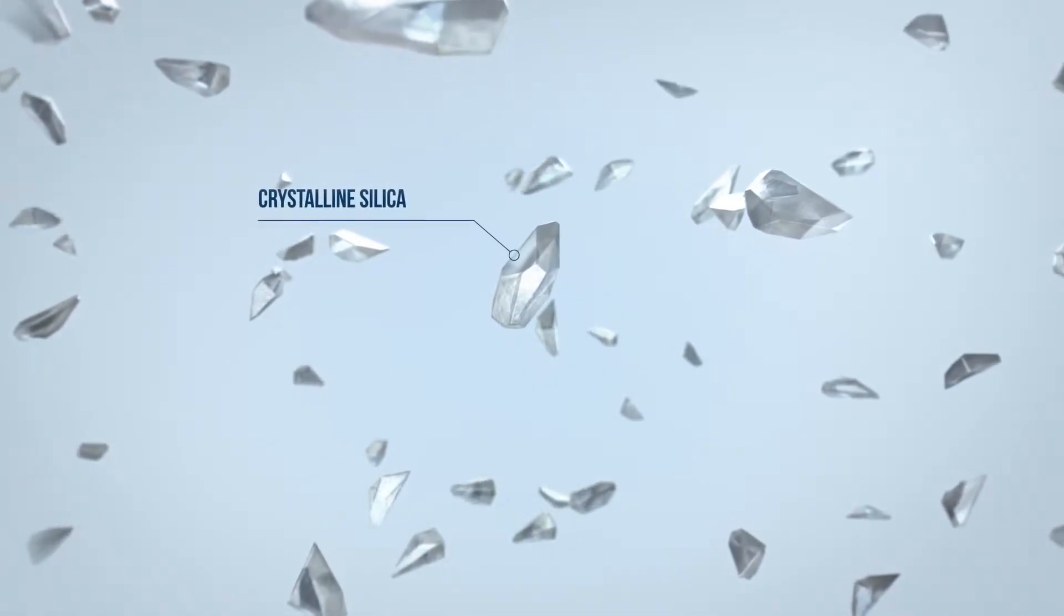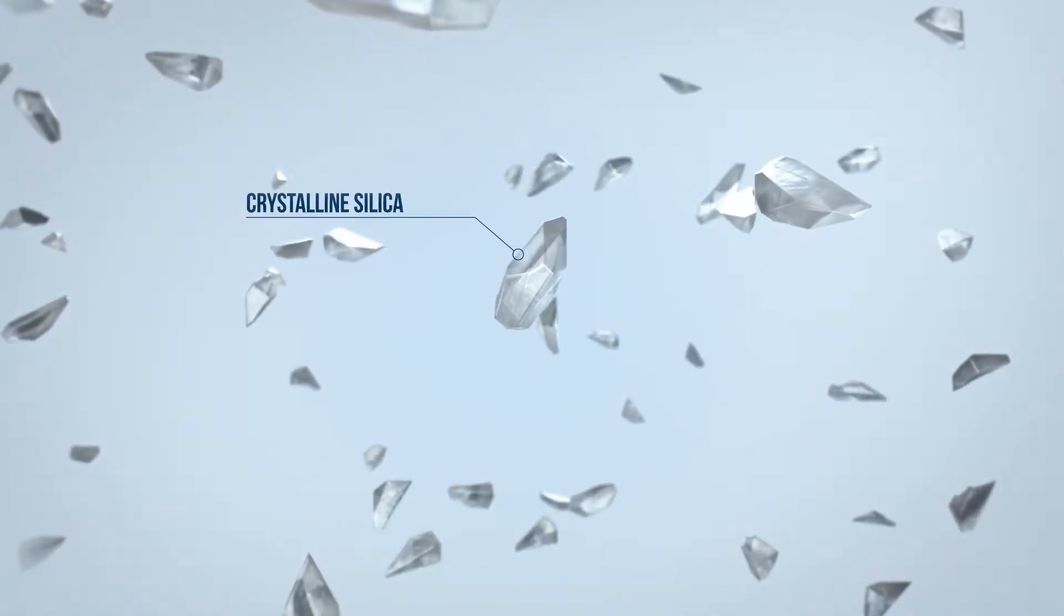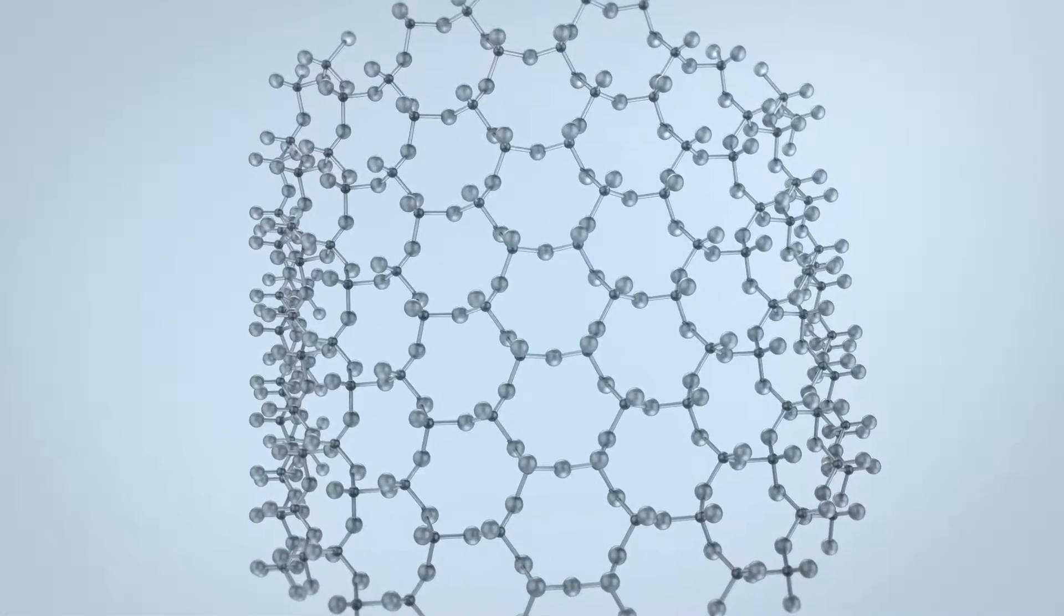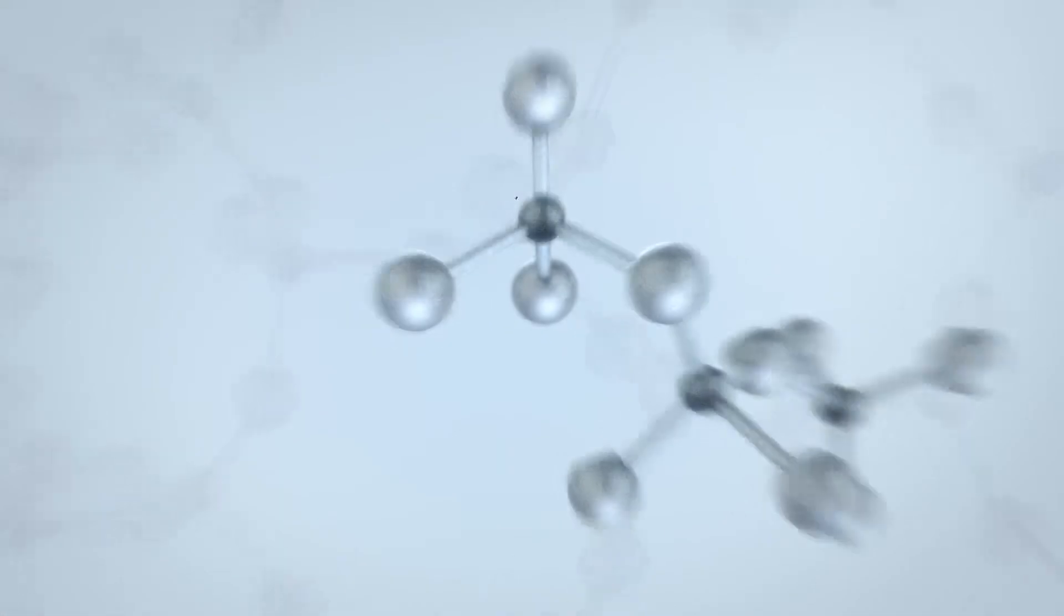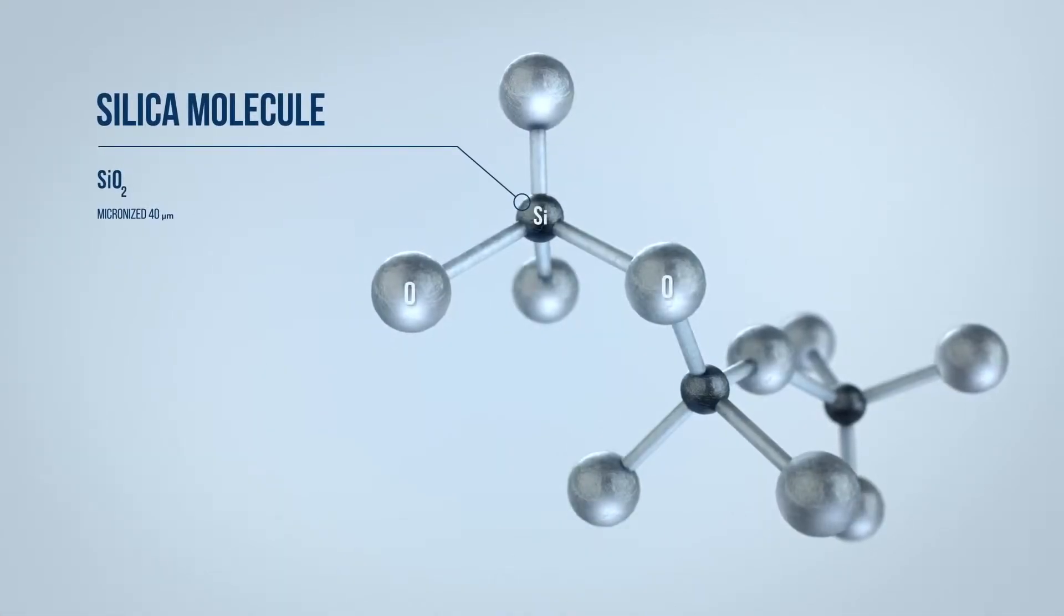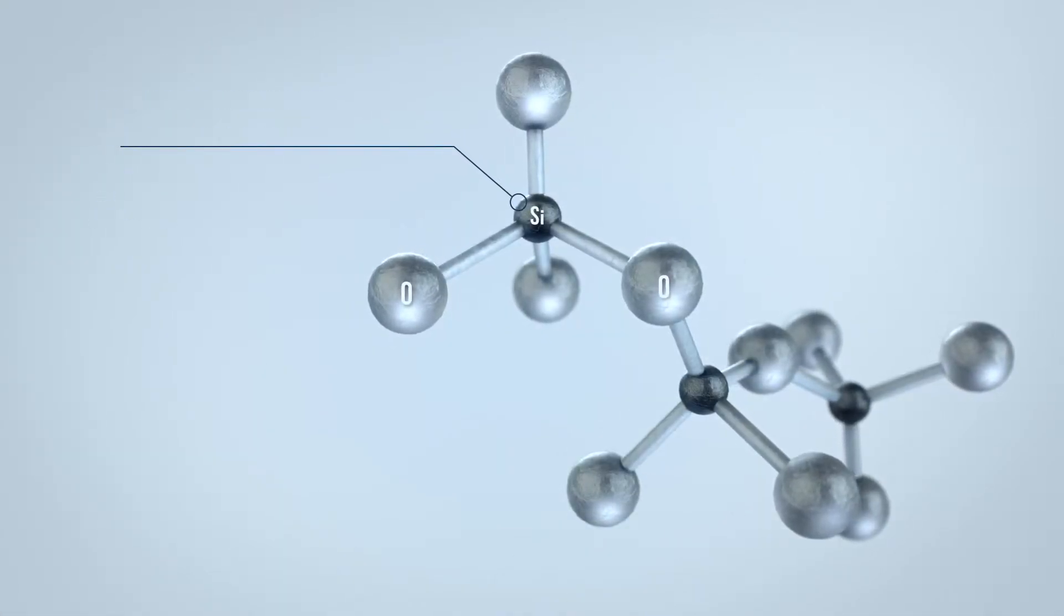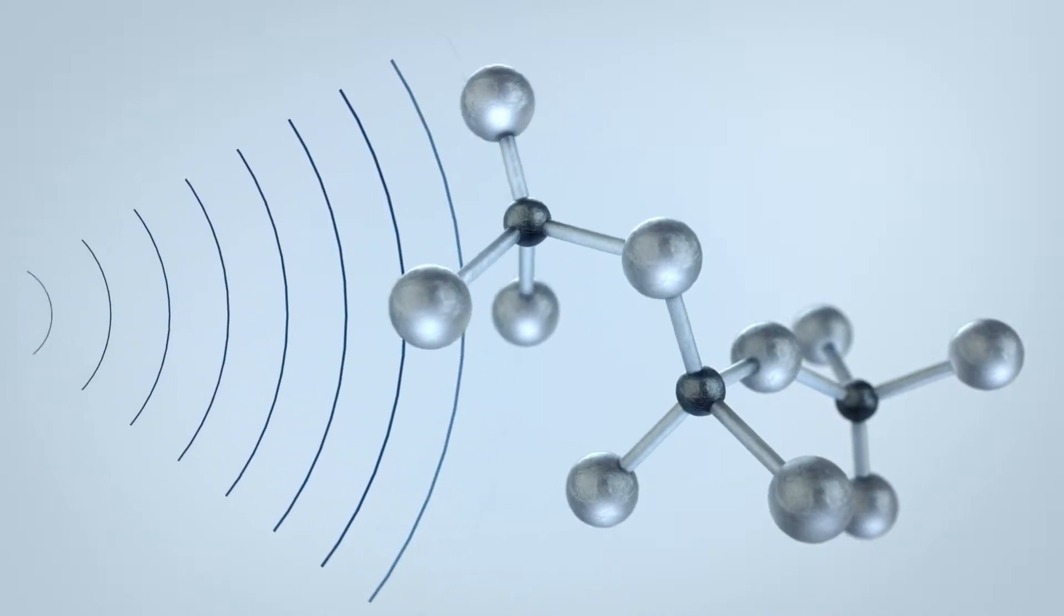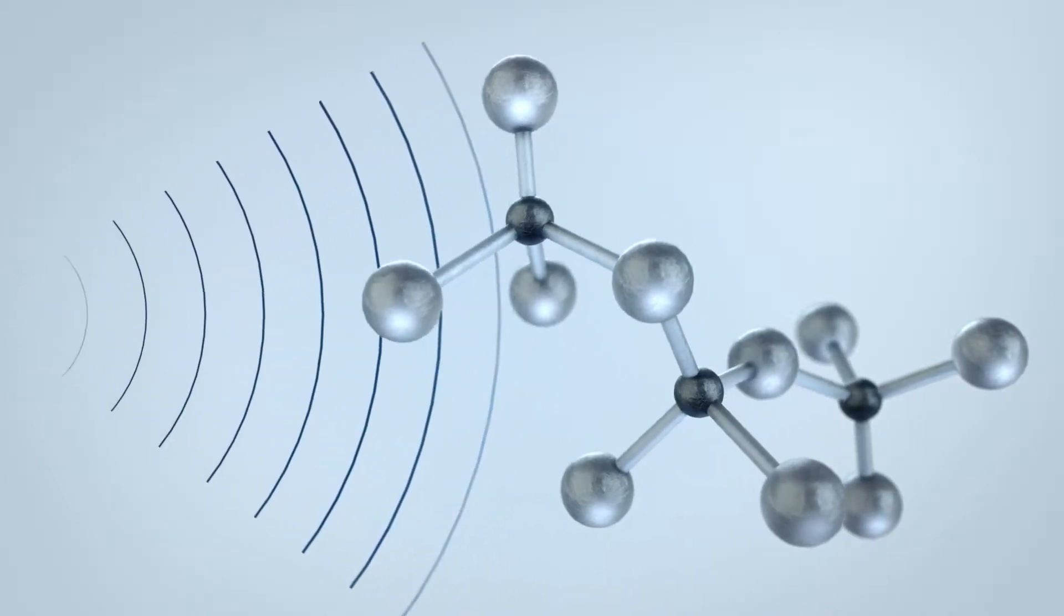Here's how it works. We start with naturally occurring crystalline silica. Crystalline silica is used because it can oscillate at specific frequencies. To create Silica Plus, we micronize particles of crystalline silica and expose them to an electromagnetic field. This field stimulates the mineral with precise frequencies.